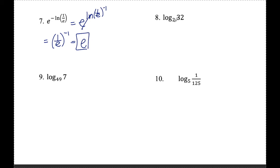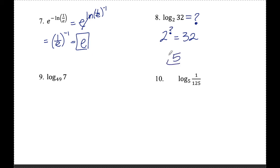Number eight: log base two of 32. This is going to equal something, so I can rewrite this in exponential form: two to the something equals 32. This is a lot easier to figure out now — I know that this exponent has to be five in order for that to work out. So log base two of 32 is equal to five.